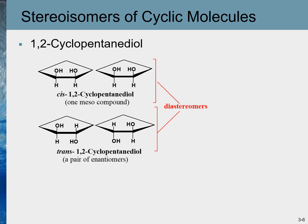Now let's take an example of 1,2-cyclopentanediol. This molecule looks similar to the previous one, but the difference is that in the previous molecule one group was OH and the other was CH₃, whereas in this case both groups attached to the cyclopentane ring are OH. Again, we expect four stereoisomers, but let's see if that is really the case.